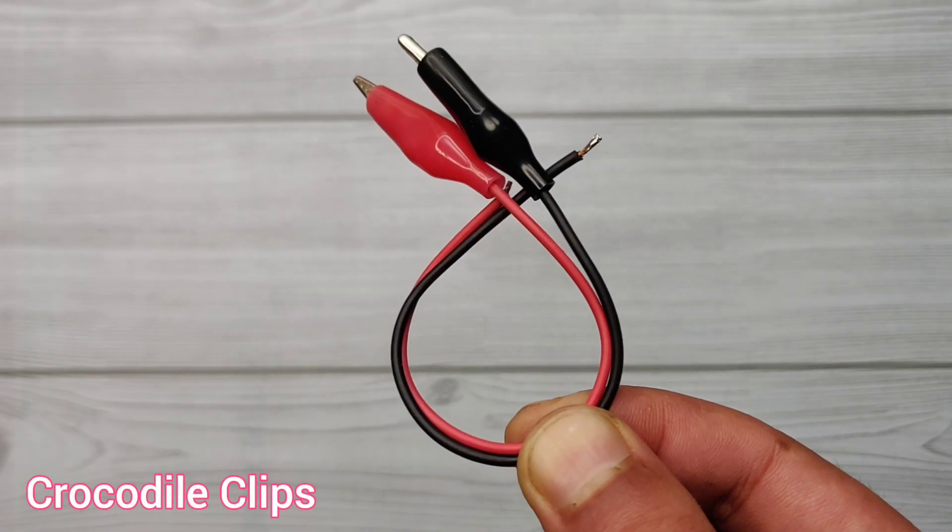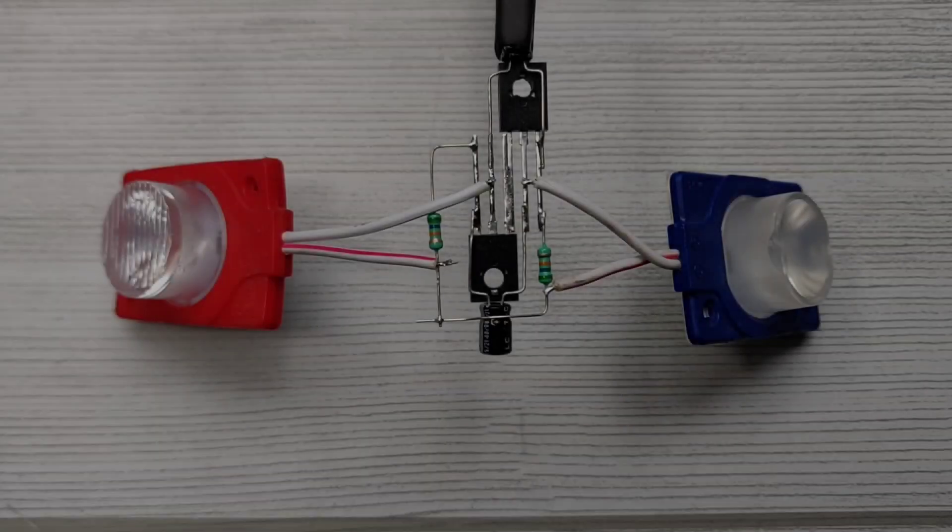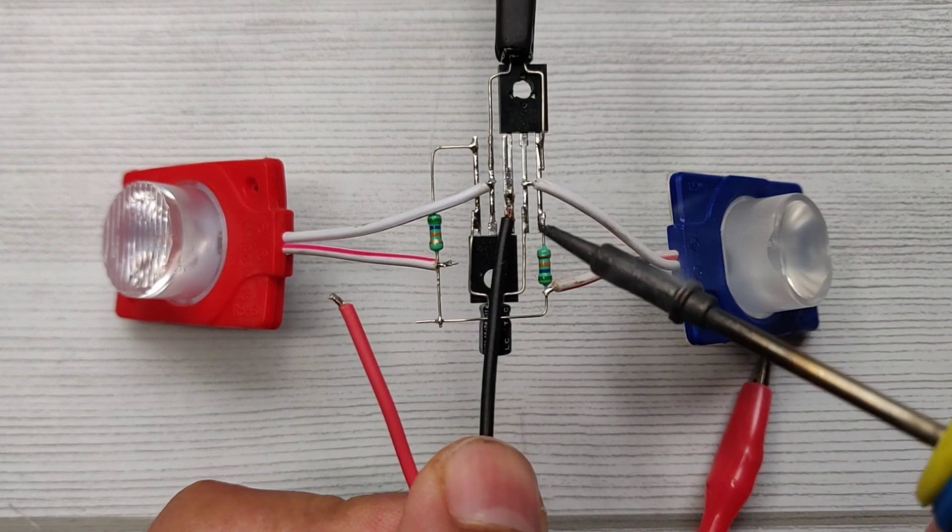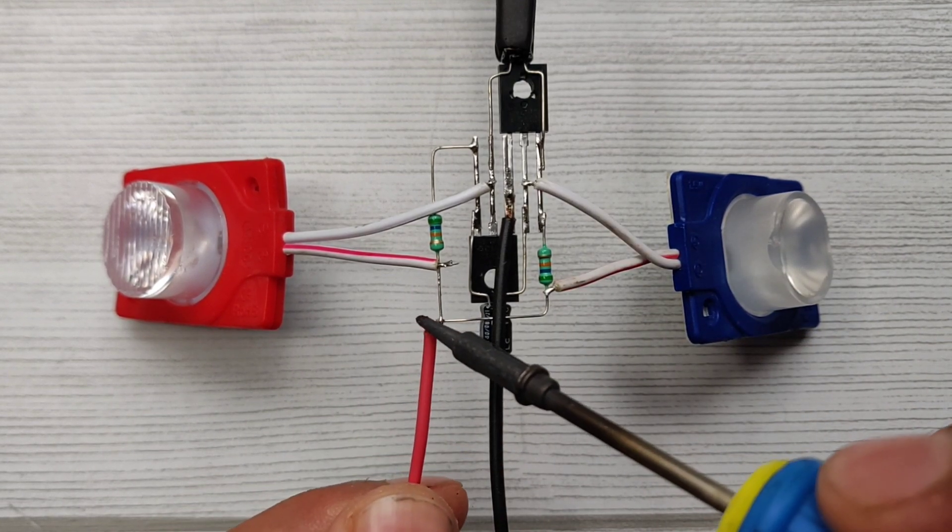I just used crocodile clip wires for battery. Solder battery negative on emitters of two transistors and positive on same resistor joint.